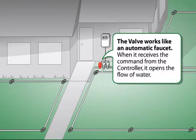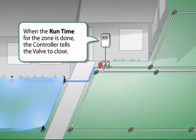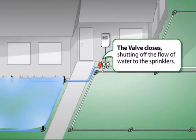The valve works like an automatic faucet. When it receives the command from the controller, it opens the flow of water. When the run time for the zone is done, the controller tells the valve to close. The valve closes, shutting off the flow of water to the sprinklers.